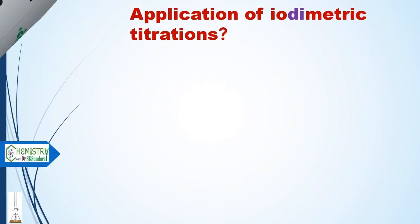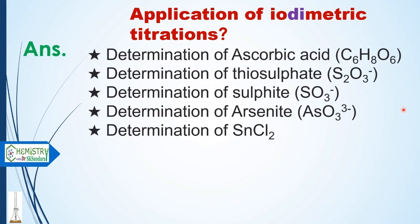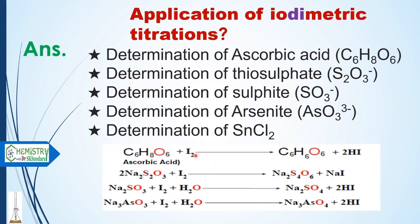Applications of iodimetric titration include: determination of ascorbic acid in vitamin C tablets, which is included in undergraduate and postgraduate chemistry courses; determination of thiosulfates; determination of sulfites; determination of arsenide; and determination of stannous chloride. In iodimetric titrations, a reducing agent reacts with iodine directly — it is a one-step reaction.